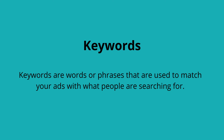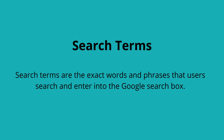So what are keywords? Keywords are the words or phrases that are used to match your ads with what people are searching for. Search terms are the exact words or phrases that users search and enter into the Google search box.